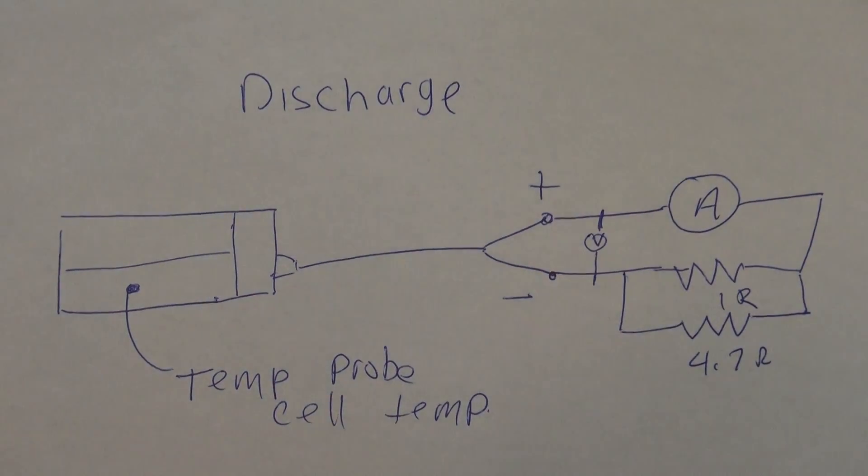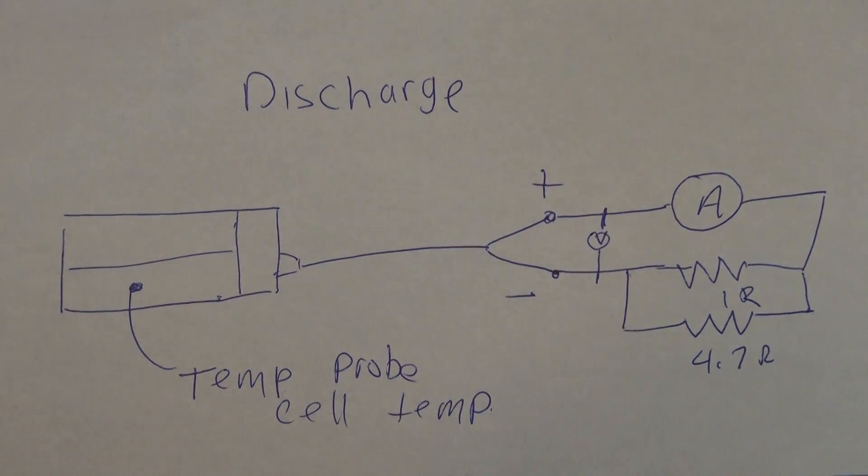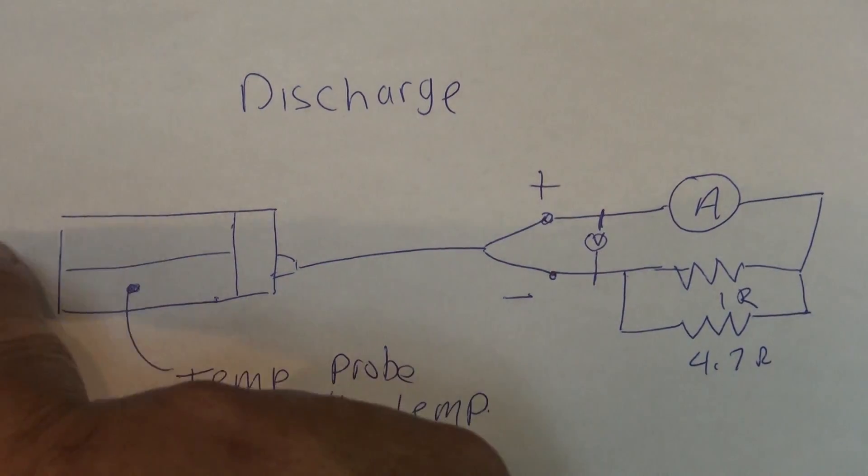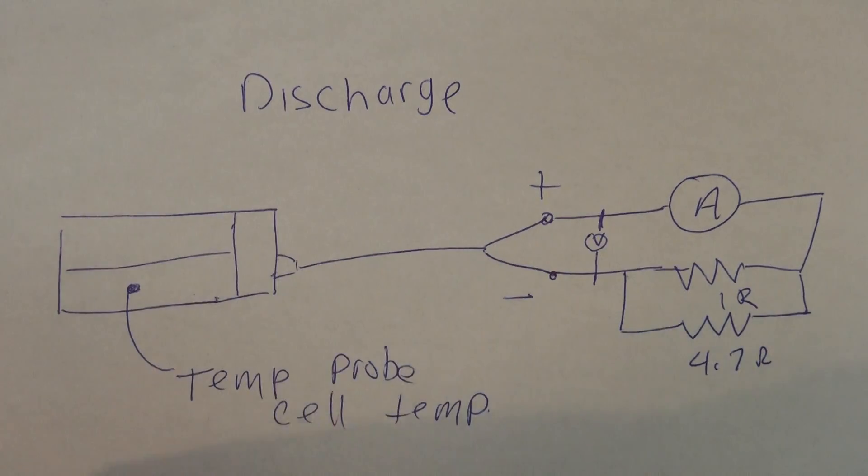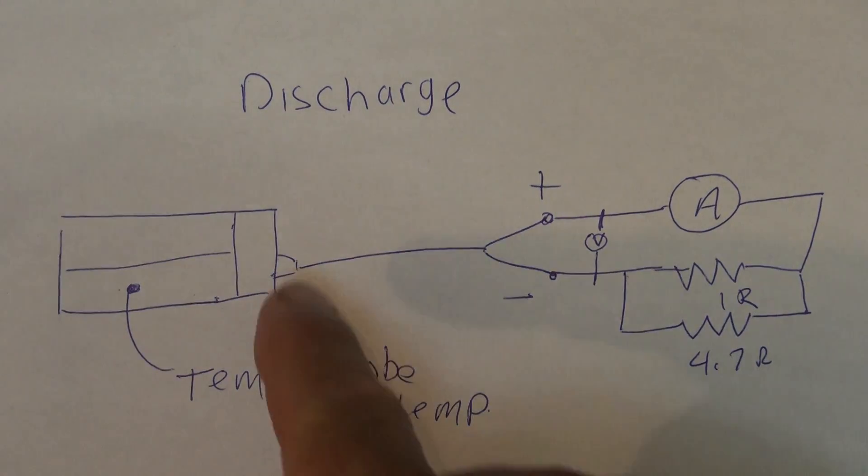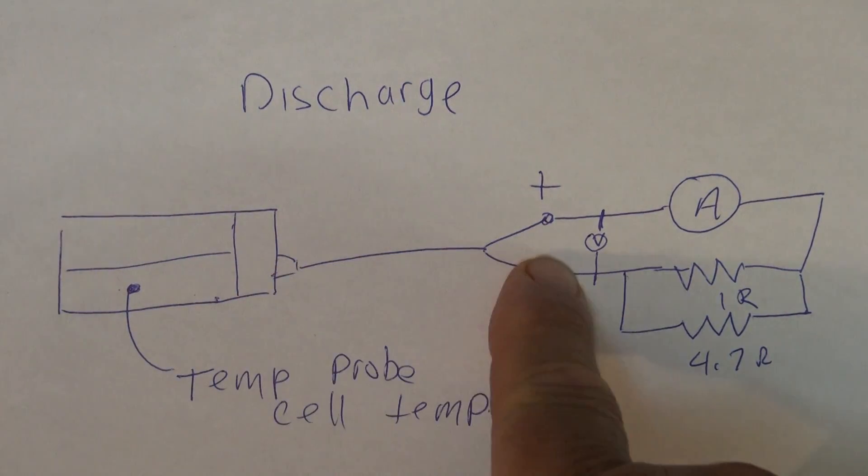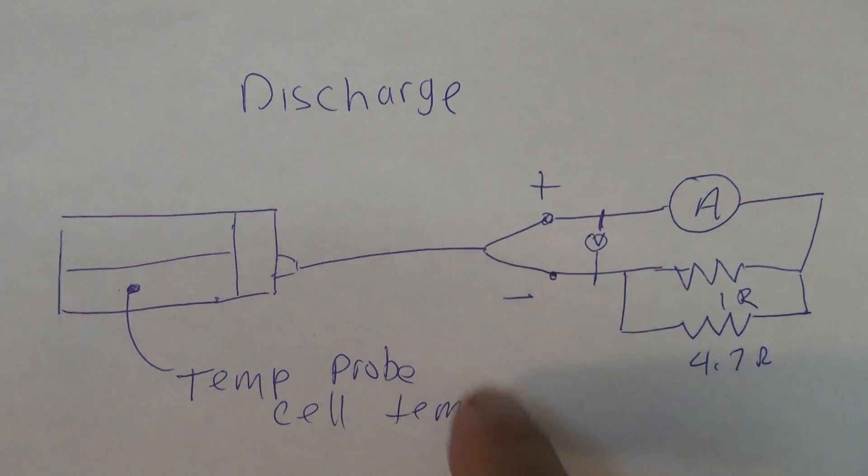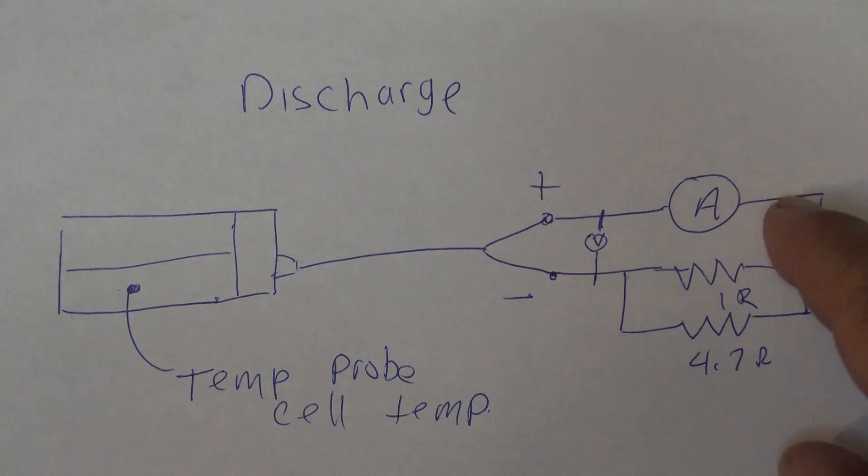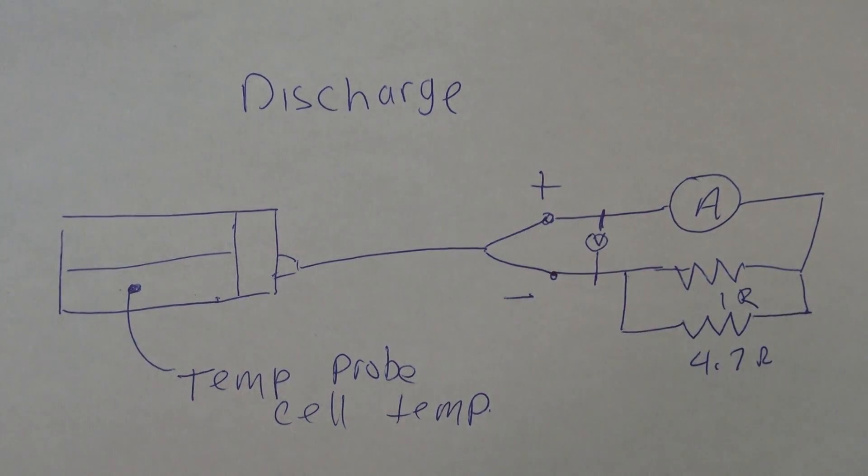Here's our discharge schematic. This is our battery pack, our USB connector. We've got a split positive and negative. One side is running through the ammeter, we've got a voltmeter across here as well and we're running through a resistive load.